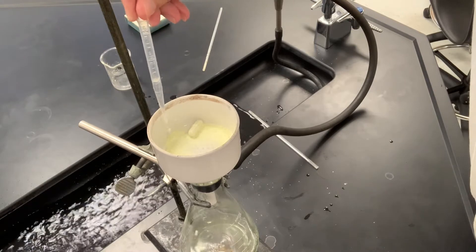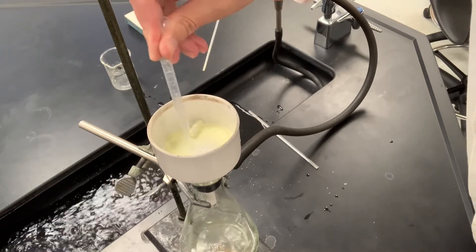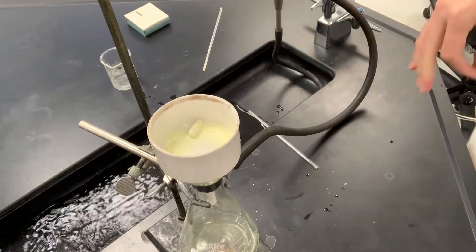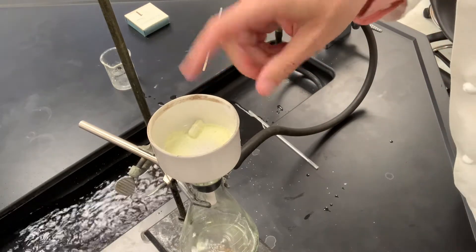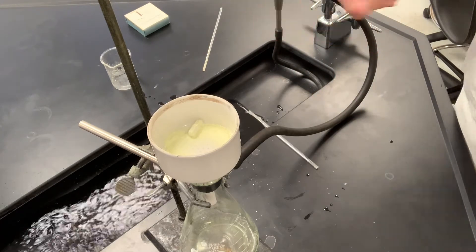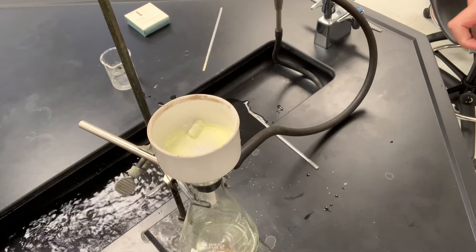That's a total rinse of about 10 to 12 milliliters. We'll let the vacuum pull through the crystals there to pull any adjacent water through, and then air dry for five minutes or so. Then we'll set this aside to dry overnight until the next lab period.